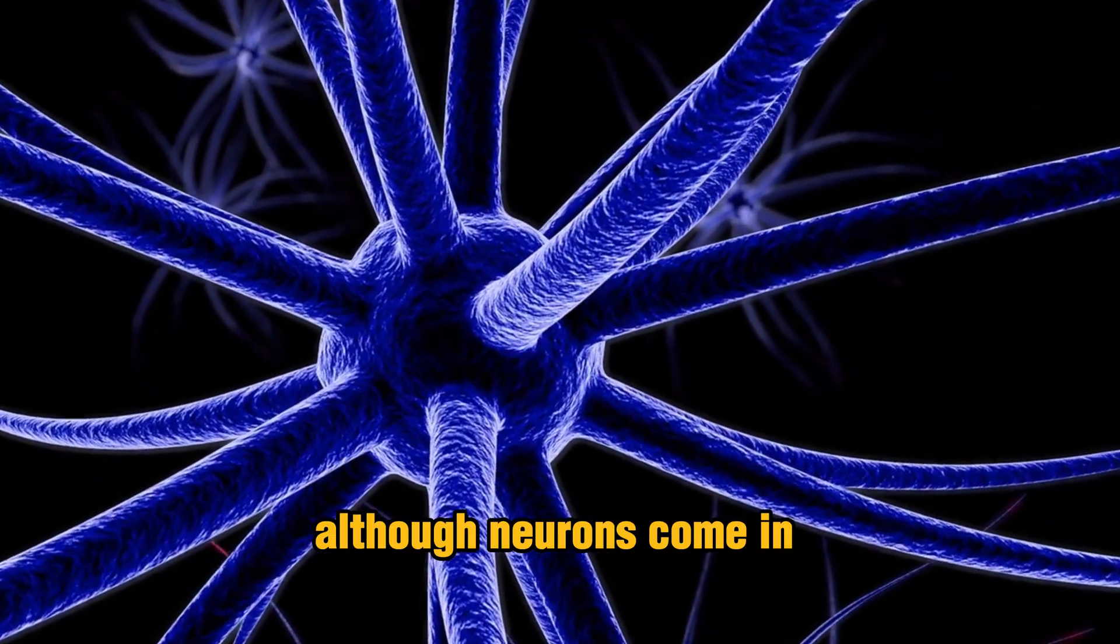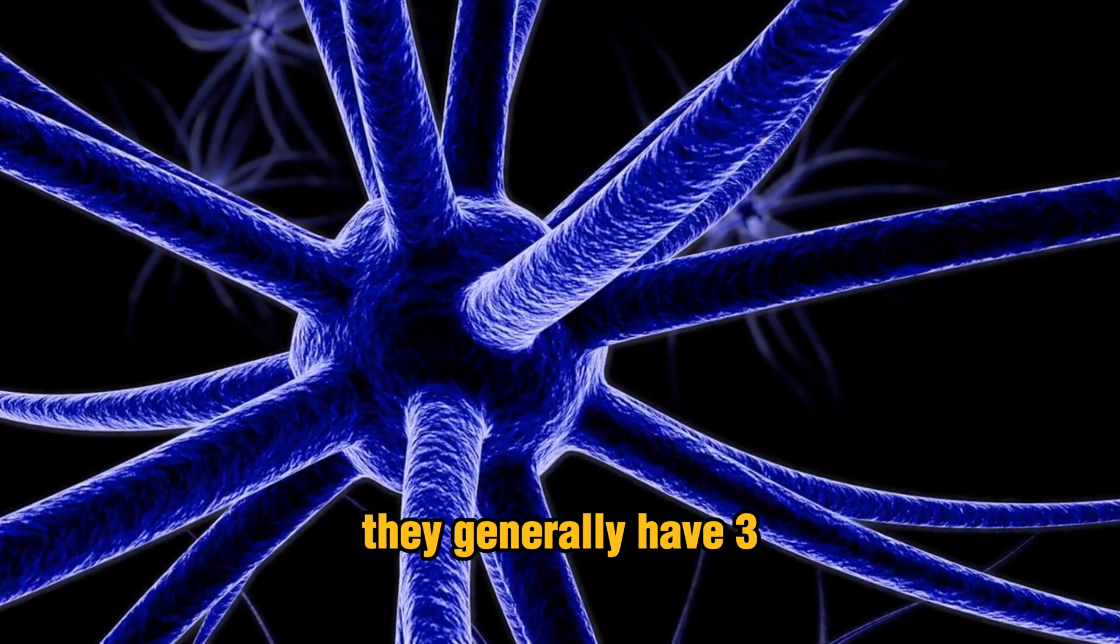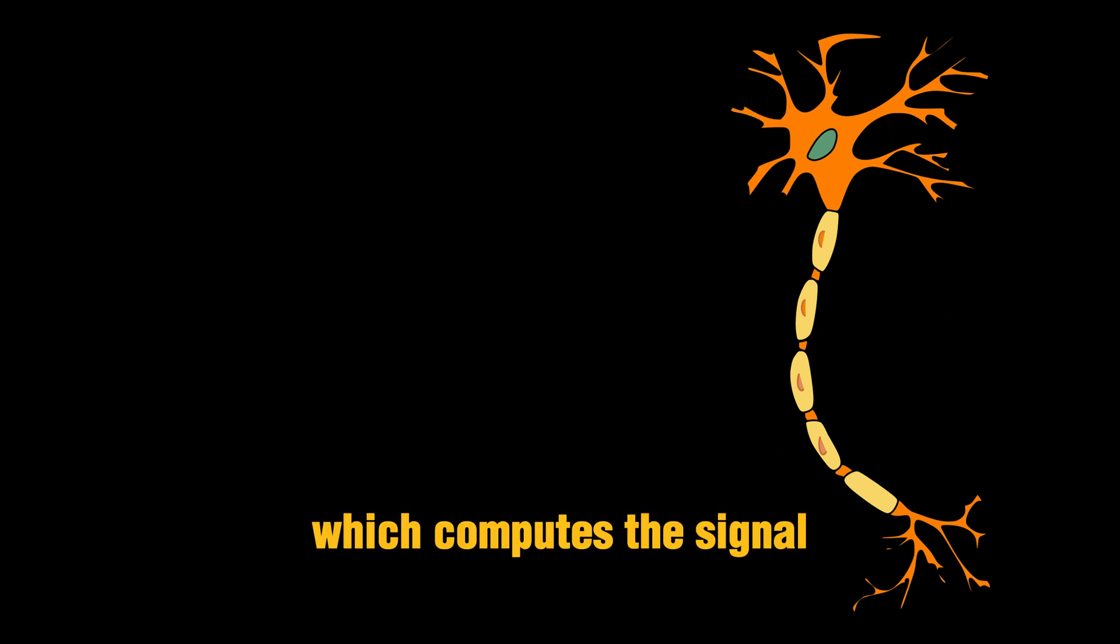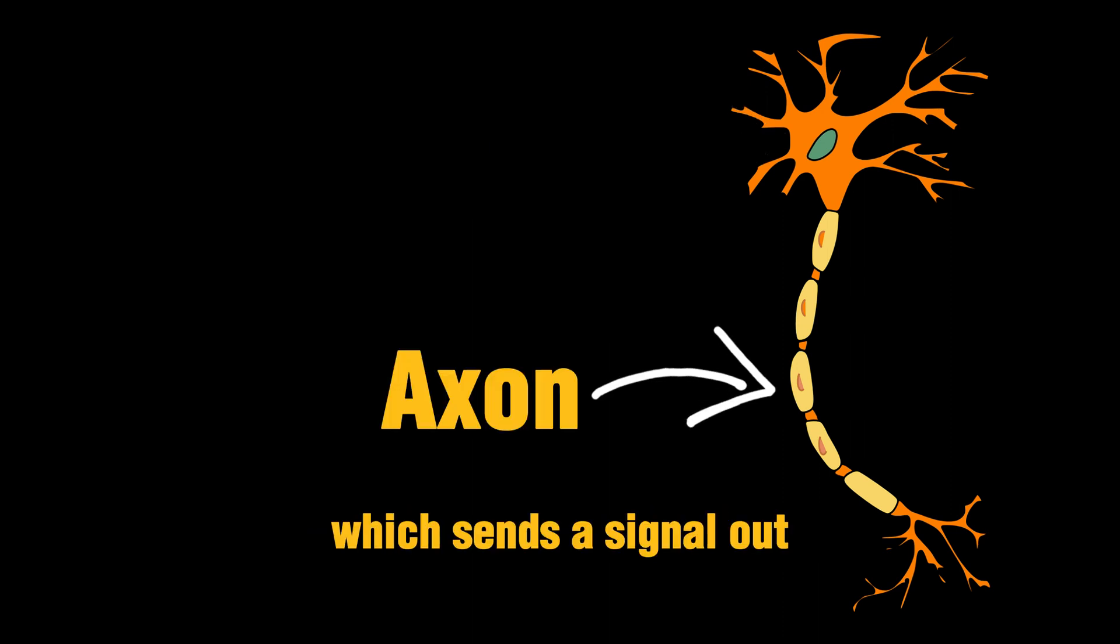Although neurons come in many different types, they generally have three parts: a dendrite which receives a signal, a cell body called a soma which computes the signal, and an axon which sends a signal out.